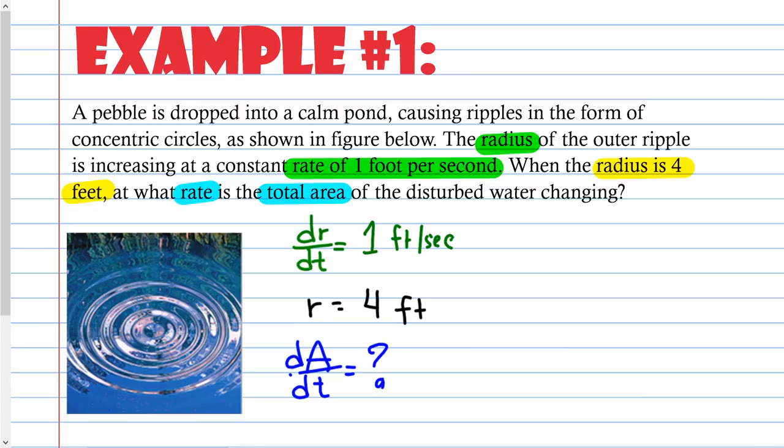This is the information I got from the problem. Looking at the information I either need to find or that I have, I need to figure out what equation I'm going to use. If I'm actually needing to find the rate of the area, then it should make sense that I'm going to use area. A rate is basically the derivative. Whenever you see the word rate, you should be thinking derivative. If I need the derivative of area, I should use the area formula, then derive it to get the rate.